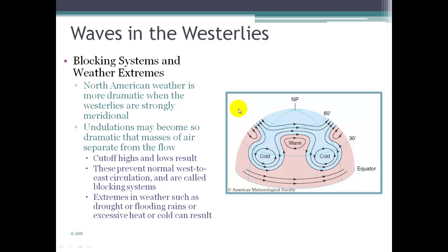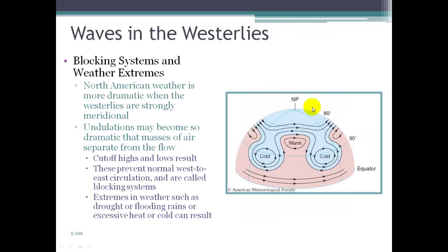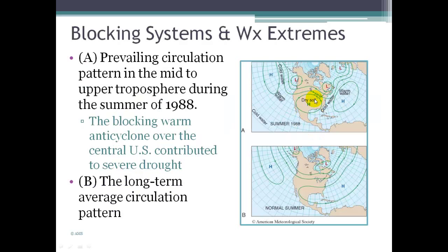We see examples of extreme weather events caused by this kind of dynamic. In 1988, there was a severe drought in the summer, caused in part by a breakaway pattern with a high pressure cell that camped out over the central United States. High pressure causes stable, sinking air, so there's no chance for thunderstorm development and very little chance of rain. Things dried out, resulting in a very severe drought. A picture below shows a more average circulation pattern for comparison — in 1988, an individual high pressure cell was stationary over the US, rather than a normal flow of winds in motion.